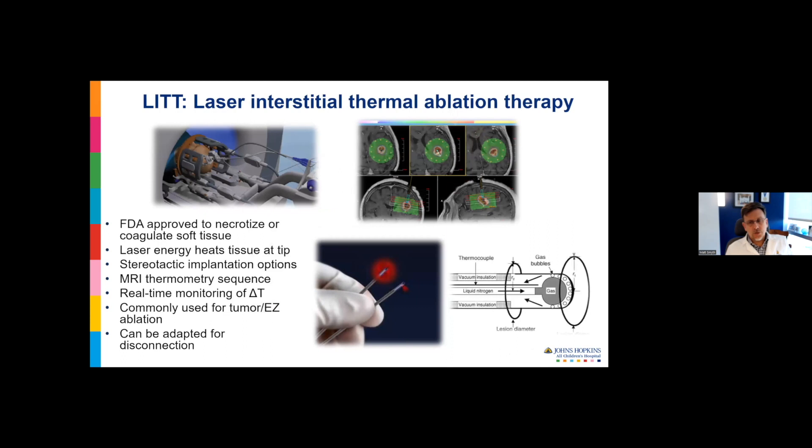So laser ablation—what is this? In the United States, our FDA has approved this system to necrotize or coagulate soft tissue in the body as well as in the brain. The MRI compatible laser fiber is introduced into the target, and then the laser is activated and the energy is translated from light into heat. The key is that the MRI scan is done in real time using a thermometry phase sequence, and it calculates a delta T or change in temperature from baseline and generates a thermal damage estimate of the region of ablation.